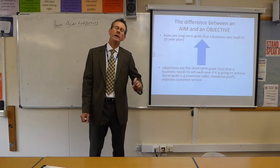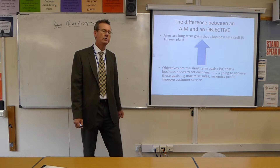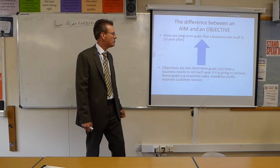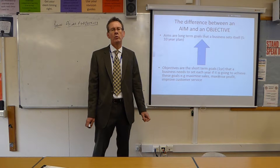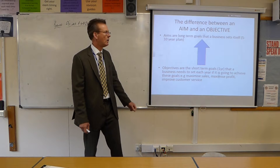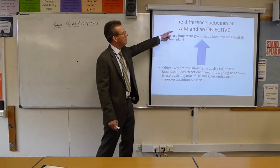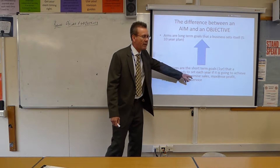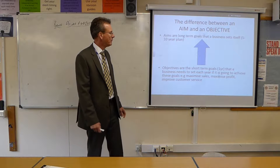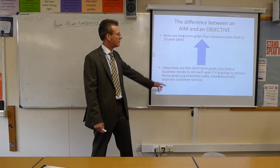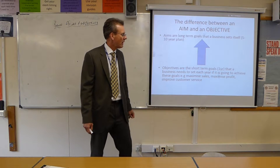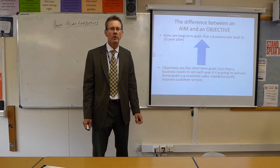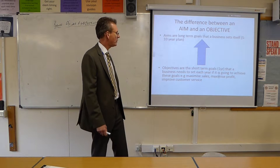Whereas objectives are the short-term goals that help us achieve our long-term plan. The short-term goals are normally one-year goals, and a business is generally not going to have more than three or four short-term goals to achieve that long-term aim. Examples include minimising costs and maximising sales with the view to maximising profit.